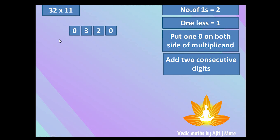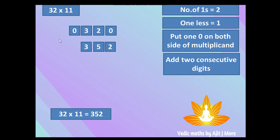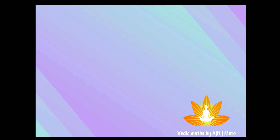Number of ones: two. One less: one. So we put one zero on both ends and get 0 3 2 0. Now go on adding consecutive digits: 2+0=2, 2+3=5, 3+0=3. That's all — your answer is 352. Isn't it easy? That is what Vedic maths is — it makes your work faster and easier.